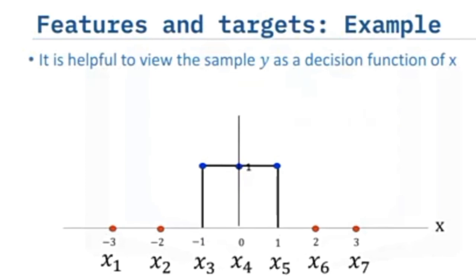We can represent the function like a box. This box function is an example of a decision function. Any values of x in the following region is 1. Any value of x in this region is mapped to 0.